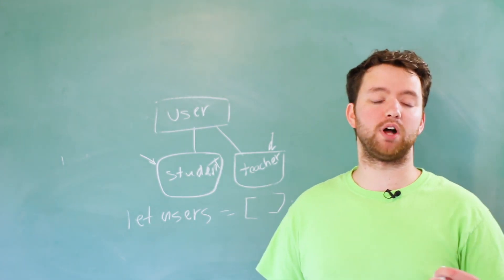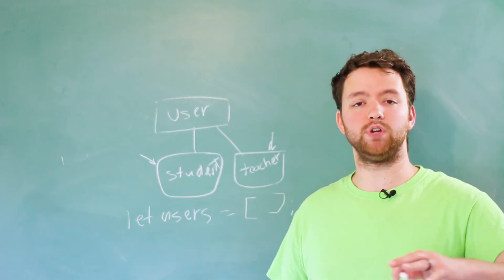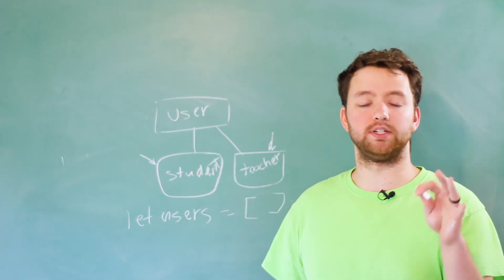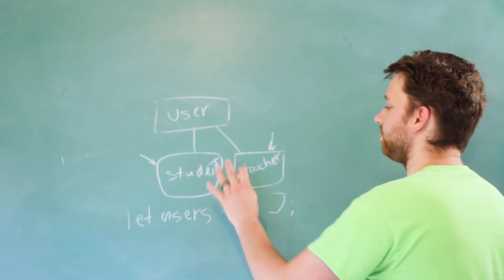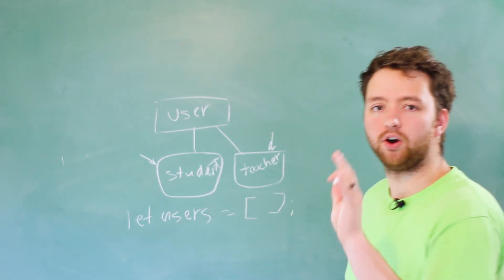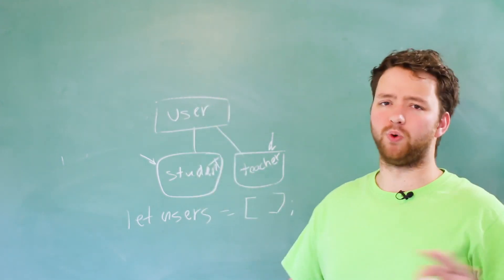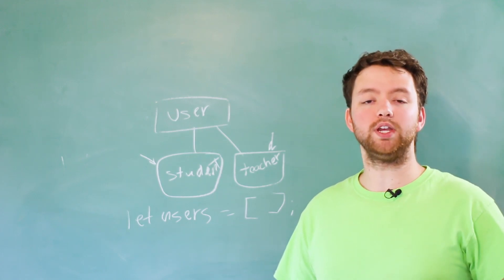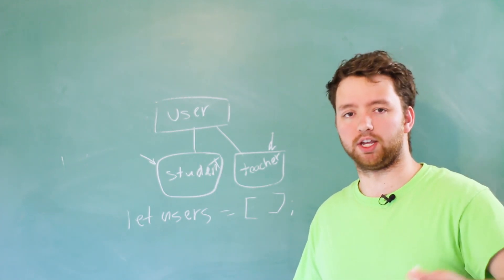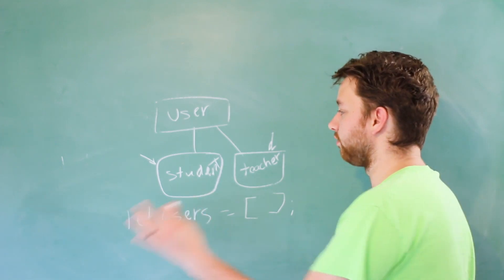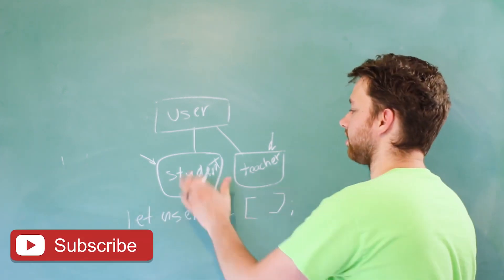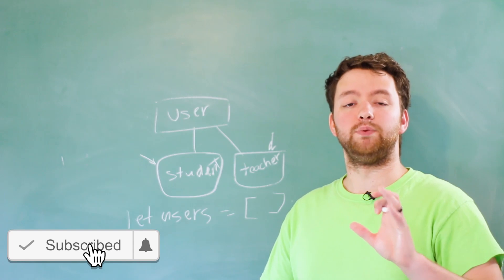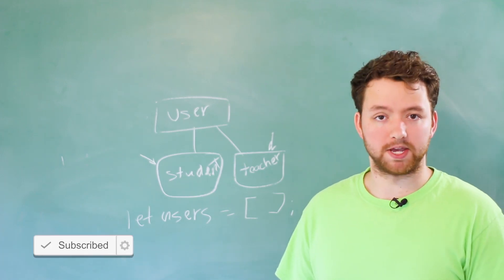Now the beautiful thing with polymorphism is that you can treat numerous different types as if they are one type. So we can treat the students and the teacher both as users. Why is that important? Well, because we can tell these users to do something.